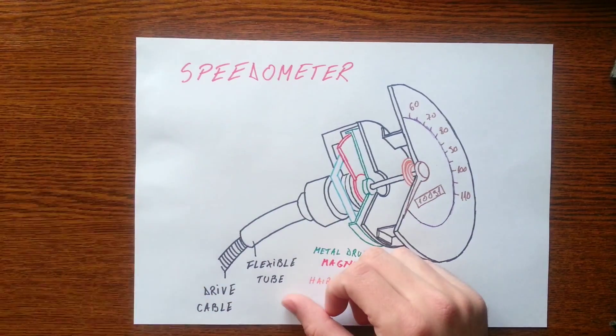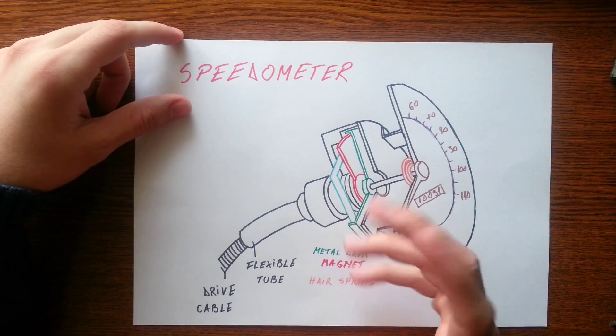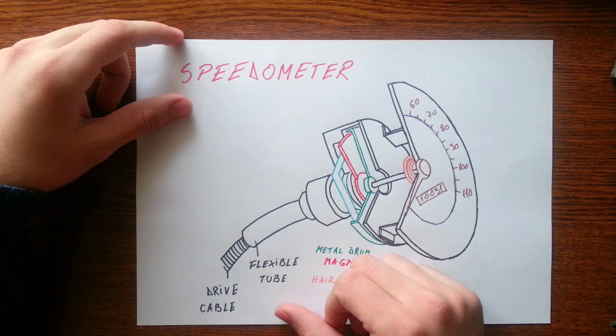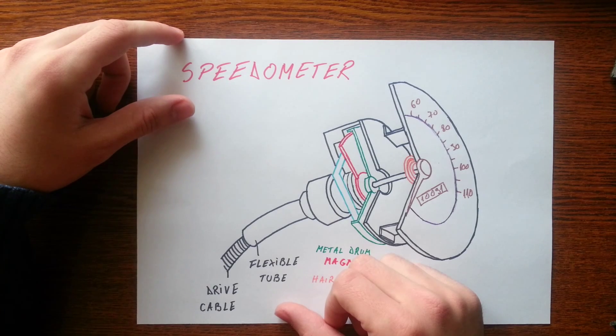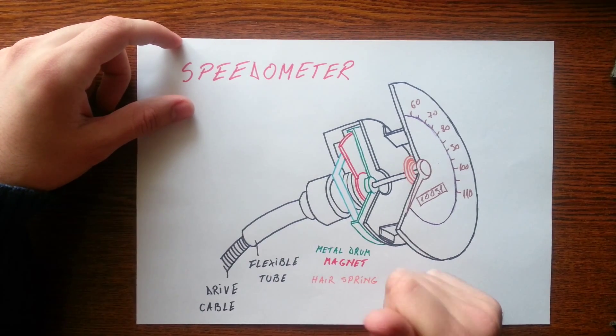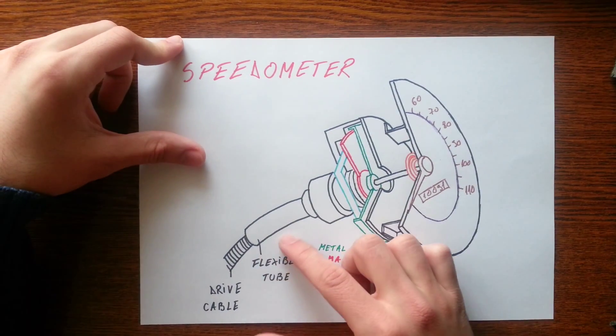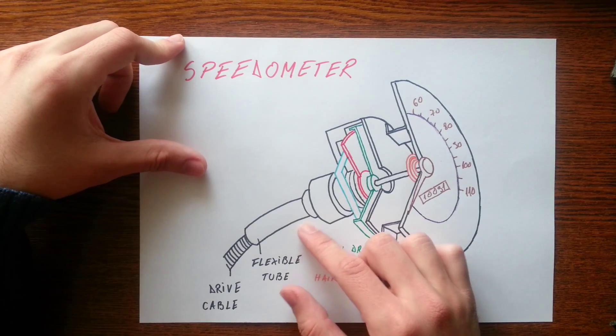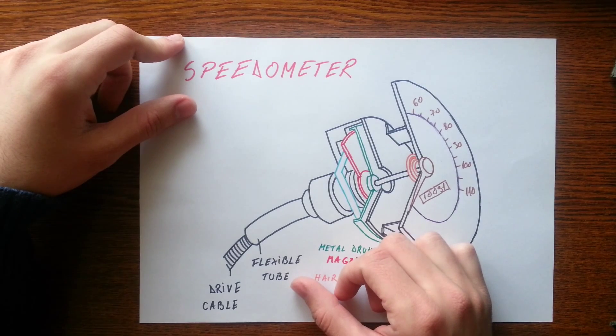Besides mechanical speedometers, there are also electronic speedometers. The most common type has a magnet attached to the gearbox output shaft and an electronic unit positioned close by to act as a pickup. Every time the rotating magnet passes the pickup unit, the unit sends a pulse of electric current down a wire to the speedometer. An electronic black box inside the speedo uses these impulses to calculate the speed of the car.